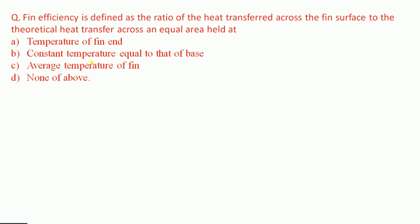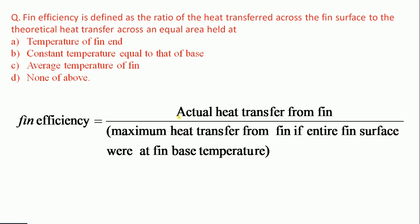Pin efficiency is defined as the ratio of heat transfer across the pin surface to the theoretical heat transfer across an equal area held at: temperature of pin end, constant temperature equal to that of base, average temperature of pin, or none of the above. Pin efficiency equals actual heat transfer from pin divided by maximum heat transfer if the entire pin surface were at pin base temperature. Therefore option B — equal to that of base — is the correct answer.